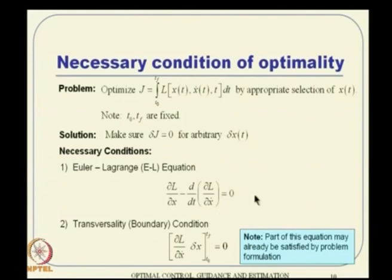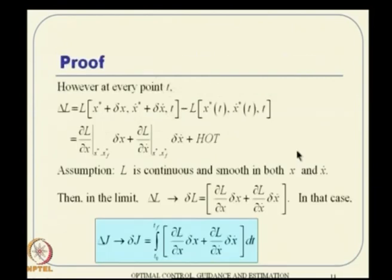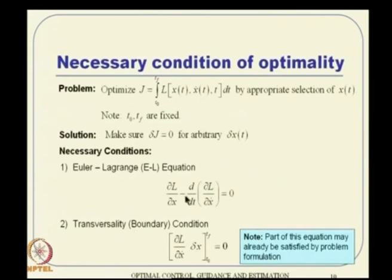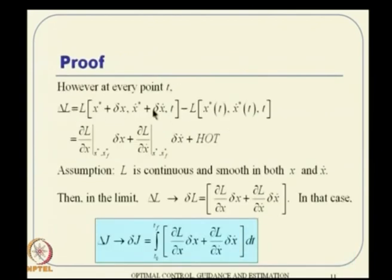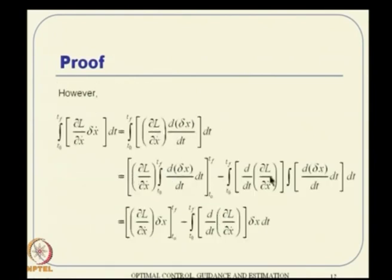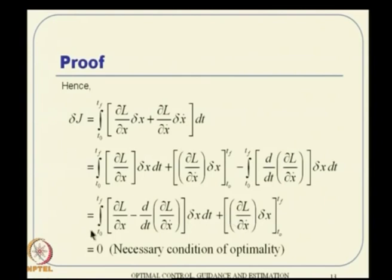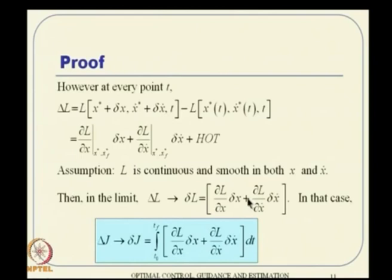The proof proceeded as follows: we took delta L, expanded it using Taylor series—first derivative terms and x-dot terms—and in the limit, delta L becomes the first variation. Then delta J is approximated accordingly. The second term of the integral is integrated by parts: delta x-dot is d/dt of delta x by definition, so after integration by parts, we substitute back and land up with these two conditions. If this expression has to be zero, then each coefficient must be zero, giving us both the Euler-Lagrange equation and the transversality/boundary condition.